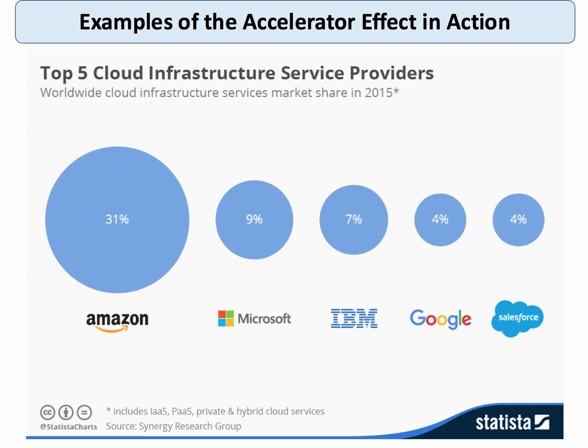Take the example of cloud infrastructure providers. Amazon has nearly one third of the market through Amazon Web Services — a tremendously fast growing and also the most profitable part of Amazon. But all of these businesses — Amazon, Microsoft, and Google — will be ramping up their investment spending in order to provide the necessary supply side capacity to meet growing demand.